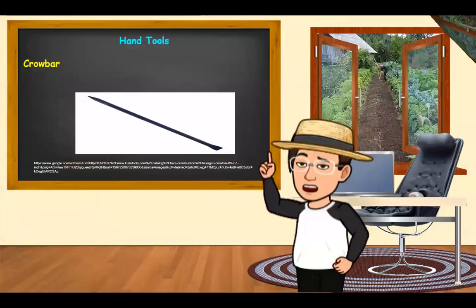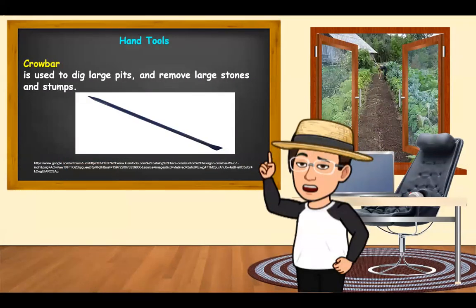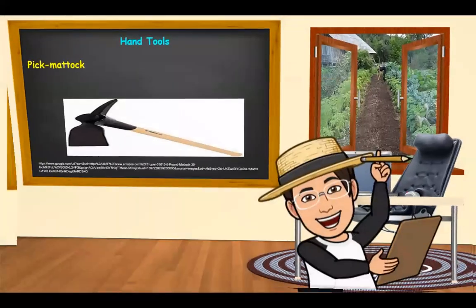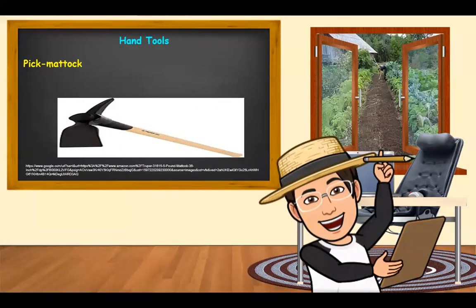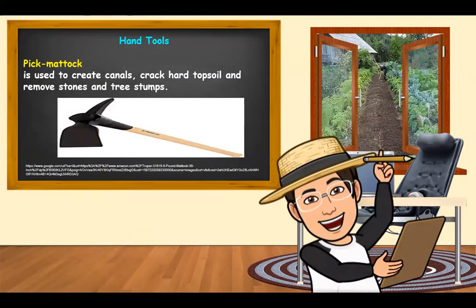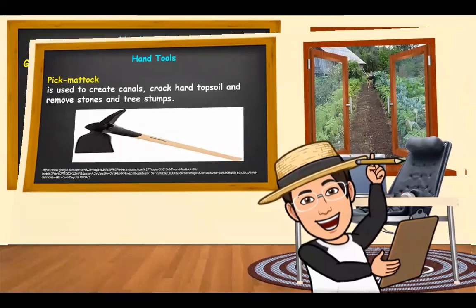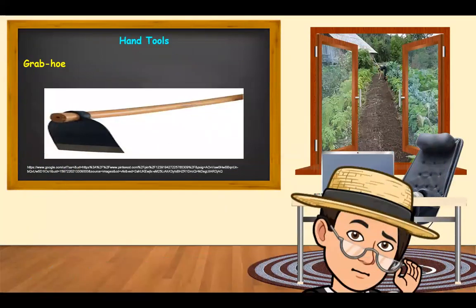Next is what we call the crowbar. A crowbar is used to dig large pits and remove large stones and stumps. Next, the pick mattock is used to create canals, crack hard topsoil, and remove stones and tree stumps. The next is the grab hoe, which is used for breaking hard topsoil and pulverizing soil.